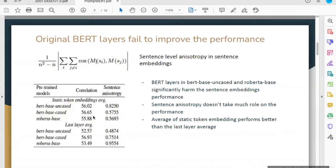This table demonstrates the statistics for the Spearman correlation on sentence embeddings. The topic is static token embeddings average and last layer average. The Spearman correlation is the average of correlation on STS 12-16, STS-B, and SICK.